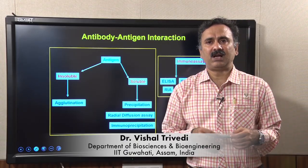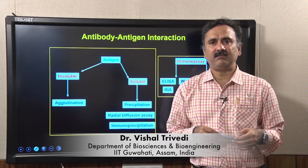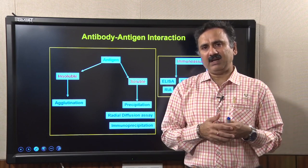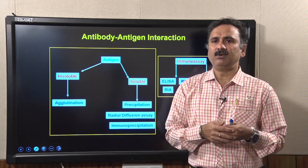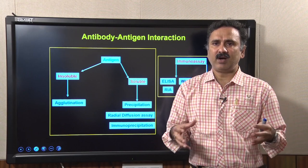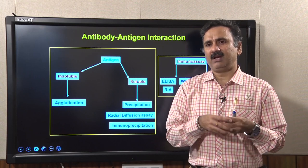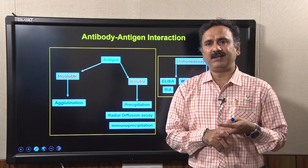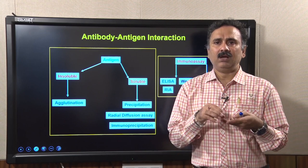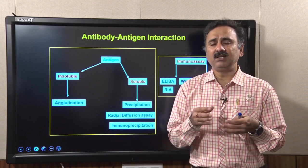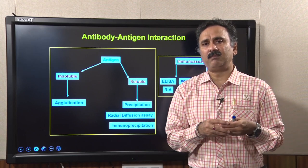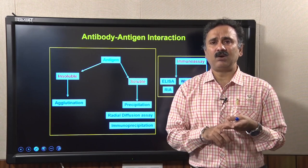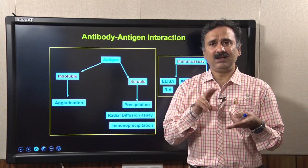Hello everybody, this is Dr. Vishal Trivedi from the Department of Biosciences and Bioengineering, IIT Guwahati. So far we have discussed different types of antigen-antibody interactions, including agglutination reactions, radial immunoassays, precipitation reactions, and immunoassays. Within immunoassays, we have discussed direct ELISA as well as indirect ELISA.